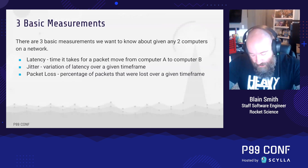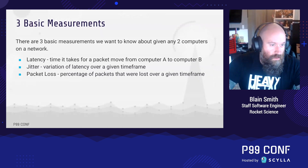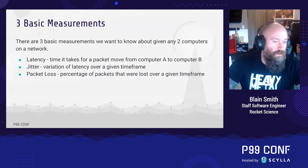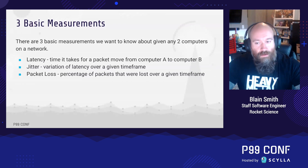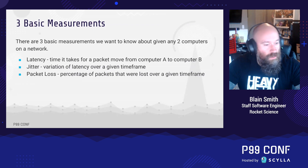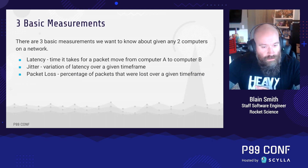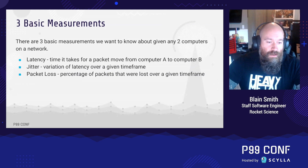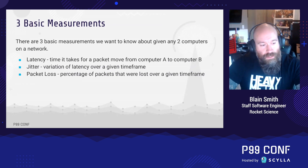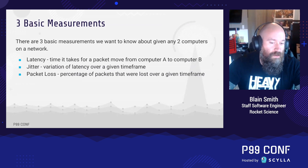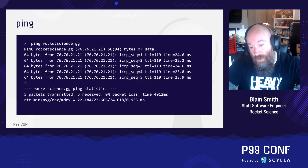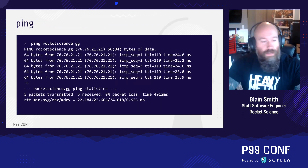What we want to dig into today is the three basic measurements for how we measure a connection between two computers in a network. We have latency — when a packet moves from A to B — jitter, which is the variation of latency over a given timeframe, and packet loss, which is the percentage of packets potentially lost over a given timeframe.